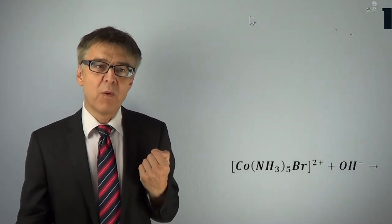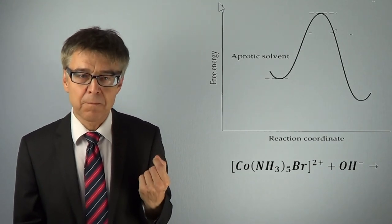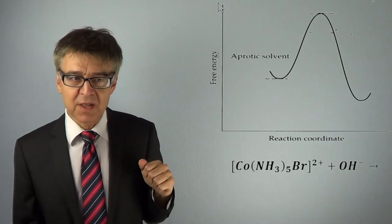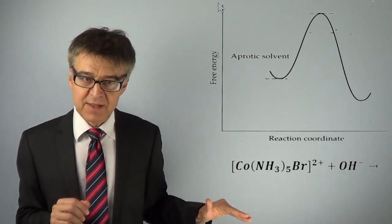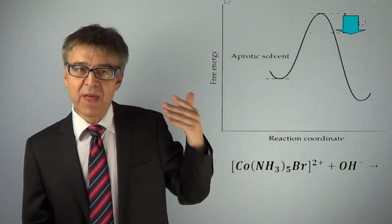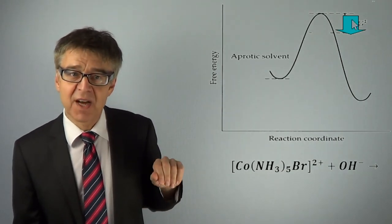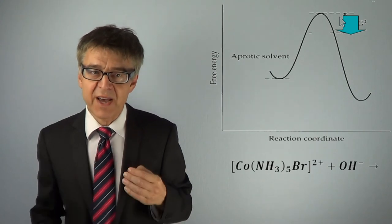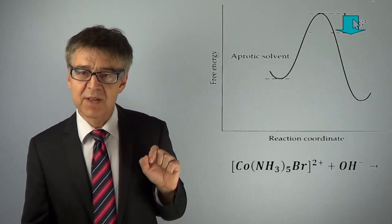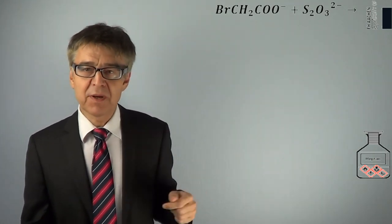Consider the reaction of a double positively charged cobalt complex with a hydroxide ion, with a reaction profile in a non-polar solvent. If we switch to a more polar solvent, we stabilize both the reactants and the transition state. However, the reactants will be more stabilized due to their greater charge, and in the end there will be an increase in free activation enthalpy, slowing down the process. These kinds of ion reactions will be slower in a more polar solvent. The reverse is true for the reaction between uniformly charged ions — here the reaction will speed up in polar solvents.